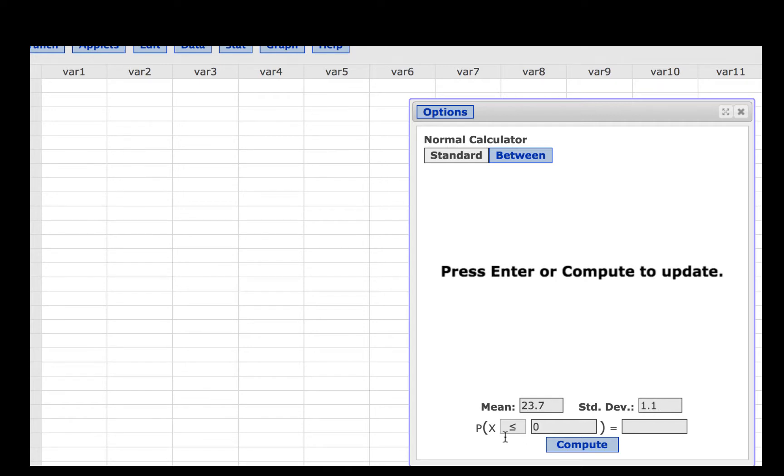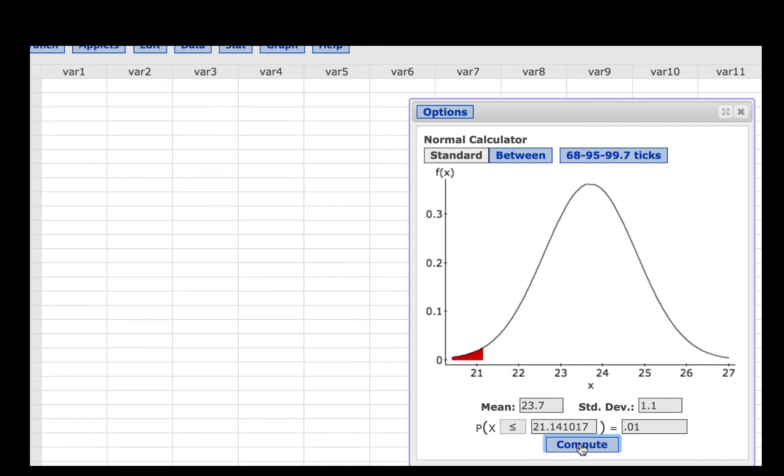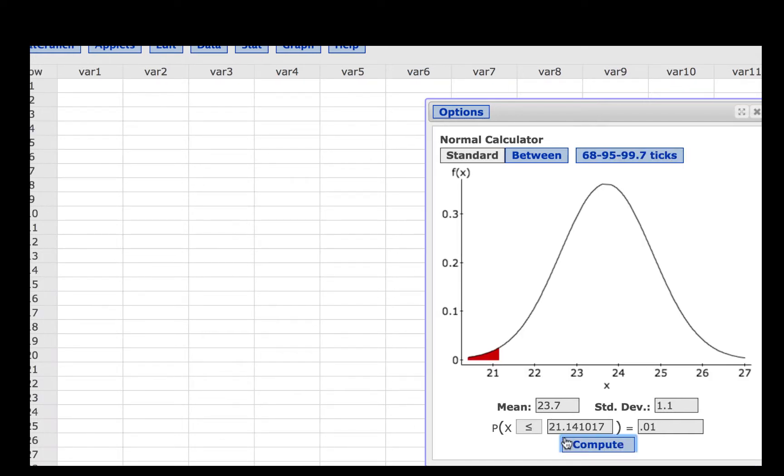We want to know the cutoff point that would leave us with 0.01 in the left tail. So we will leave this at less than or equal to and click compute. That cutoff point would be 21.1 if we round to one decimal place as requested in the problem.